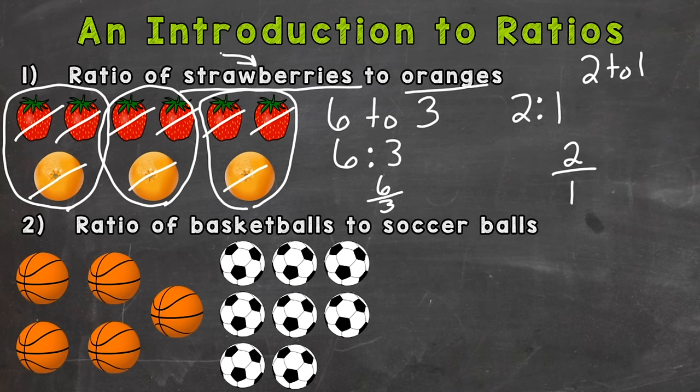So let's take a look at number two: ratio of basketballs to soccer balls. Well, there are five basketballs and there are eight soccer balls. So we could put five to eight, we could use a colon—that represents five to eight—or we could use a fraction, five to eight.